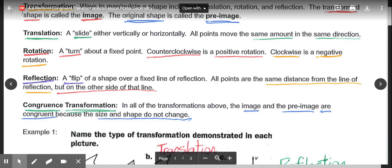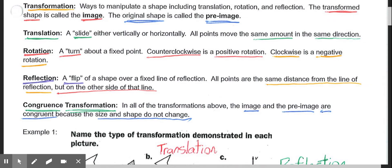Lastly we have a reflection. A reflection is a type of transformation that can be thought of as a flip. A reflection is a flip of a shape over a fixed line of reflection. All points are the same distance from the line of reflection, but now they're on the opposite side.